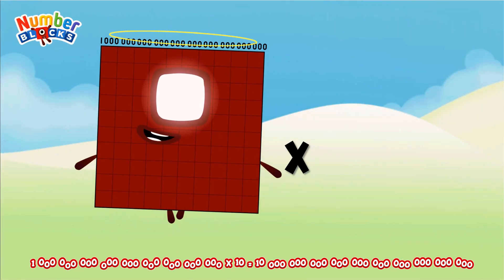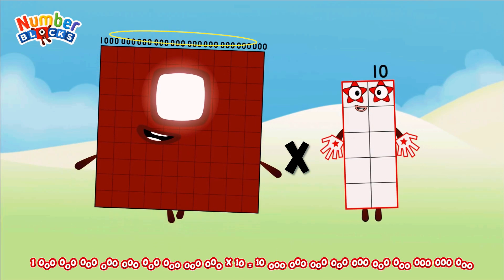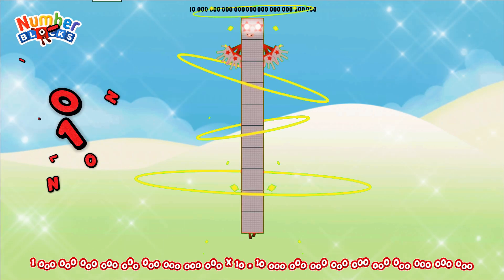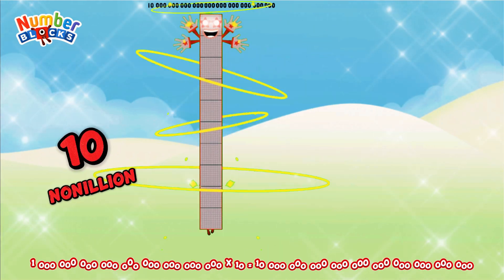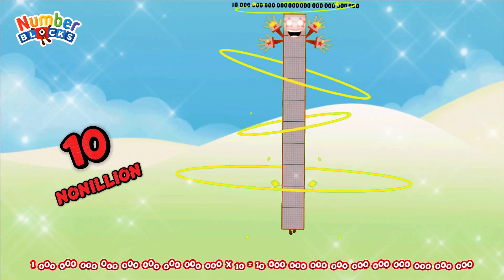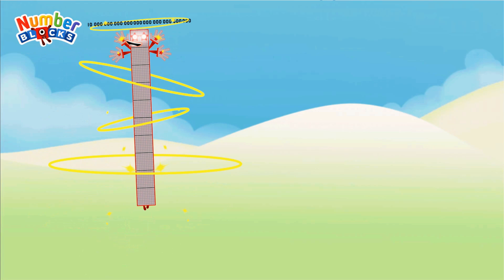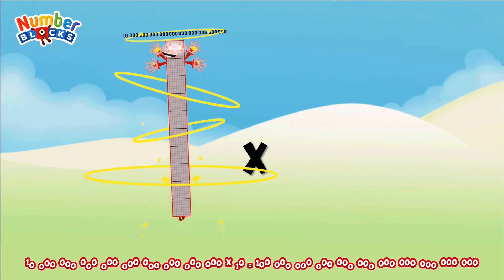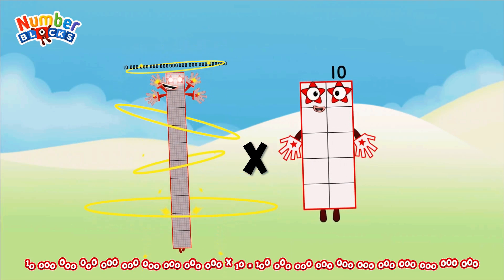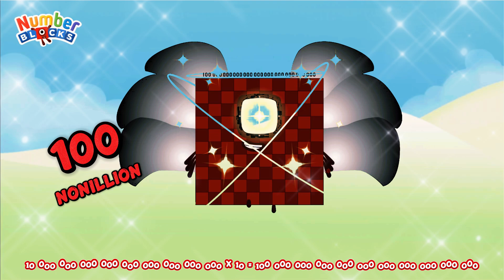1 nonillion multiplied by 10 equals 10 nonillion. 10 nonillion multiplied by 10 equals 100 nonillion.